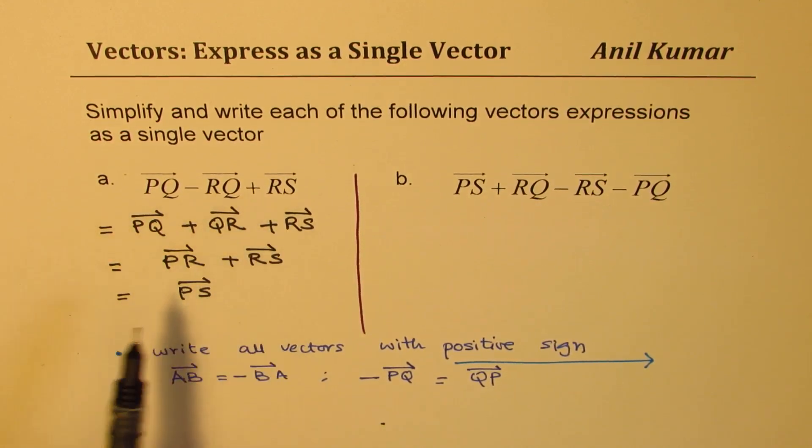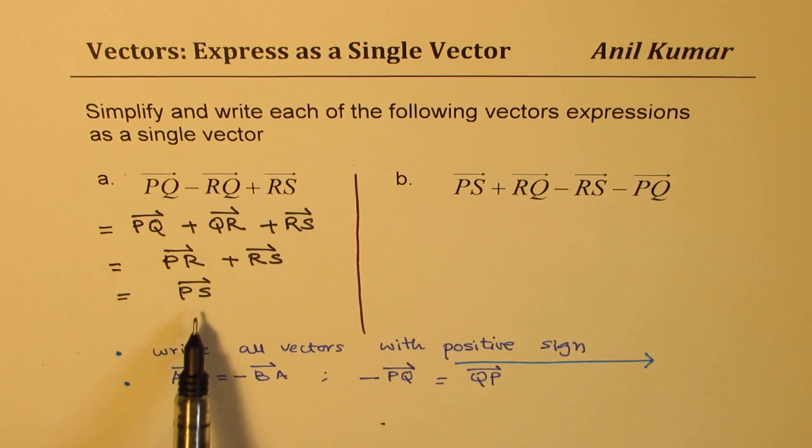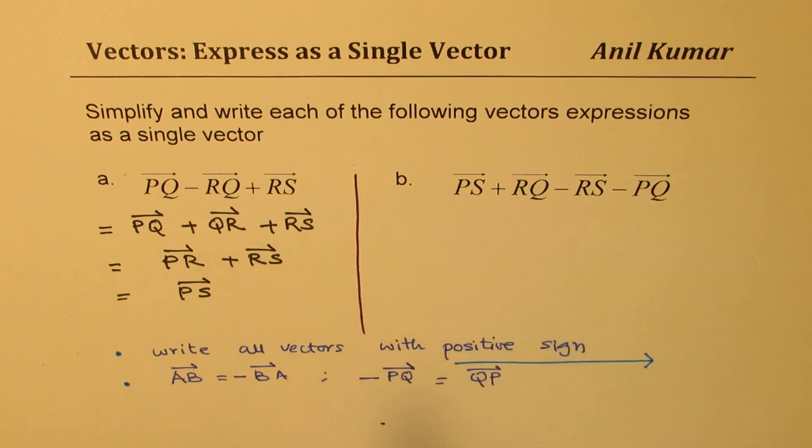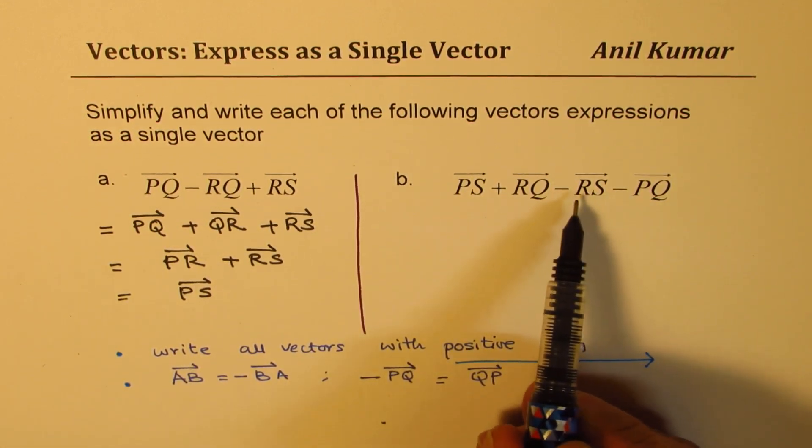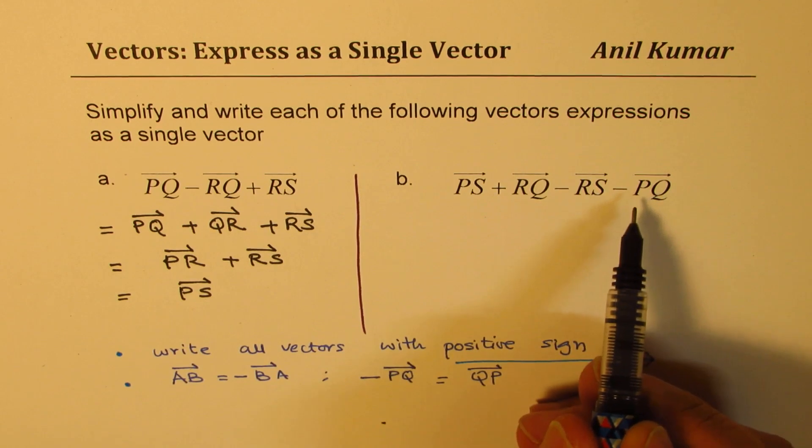So I hope now you understand how easy it is to write sum or difference of vectors as a single vector. Let's adopt the same method here and try to figure it out. I would like you to pause the video, answer the question and then check with my solution. So the first step again is change these two and make them positive. How could you do it? Write RS as SR and PQ as QP.